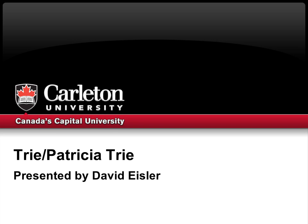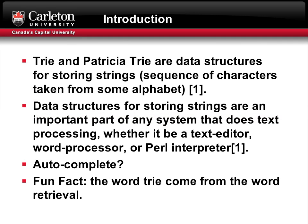Today I'm going to present a quick overview on the data structures Trie and Patricia Tree. A Trie and Patricia Tree are data structures for storing strings, where a string is a sequence of characters from some alphabet. Data structures for storing strings are an important part of any system that does text processing, whether it be a text editor, word processor, or a Perl interpreter. Have you ever wondered how our cell phones are able to autocomplete our words? These data structures begin to explore techniques which can help achieve this.